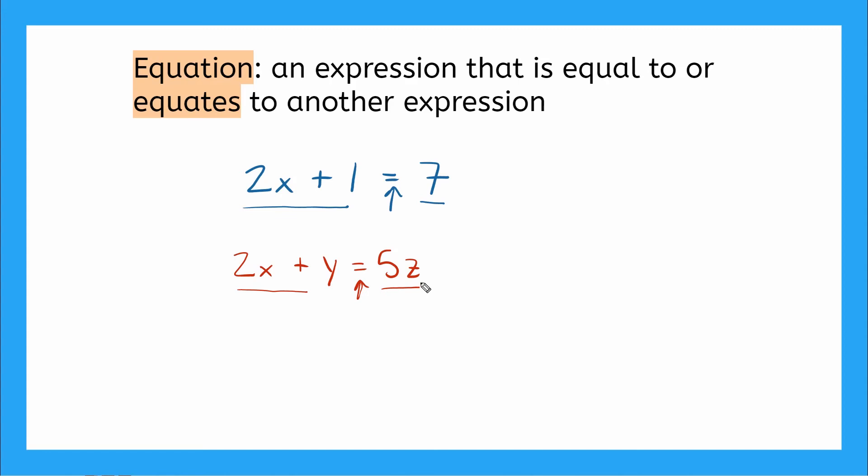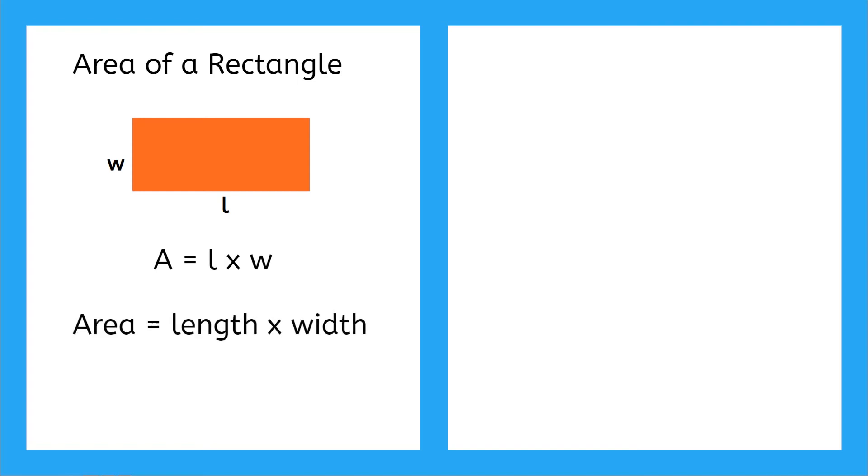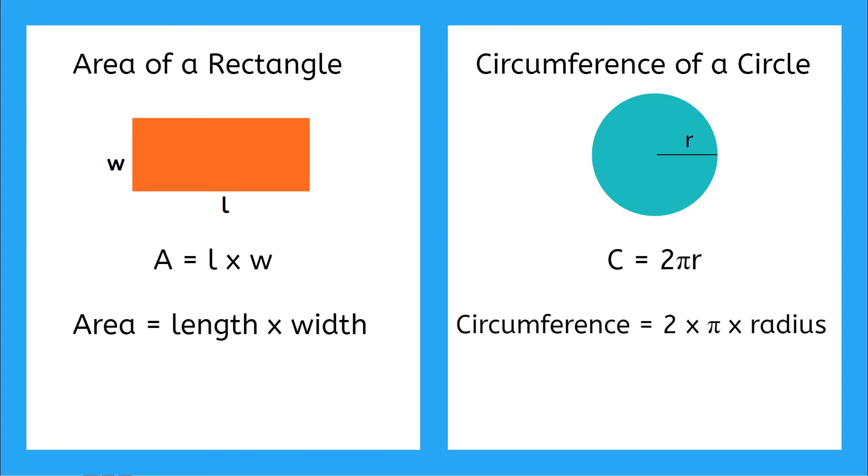So what are some equations you probably already know? Some super famous equations are the area of a rectangle. Do you remember it? It says A equals L times W, or area equals length times width. How about the circumference of a circle? That equation looks like C equals 2 pi R, which means circumference equals 2 times pi times the radius of the circle. See, that's awesome. You already know how to use equations. This isn't so complicated.